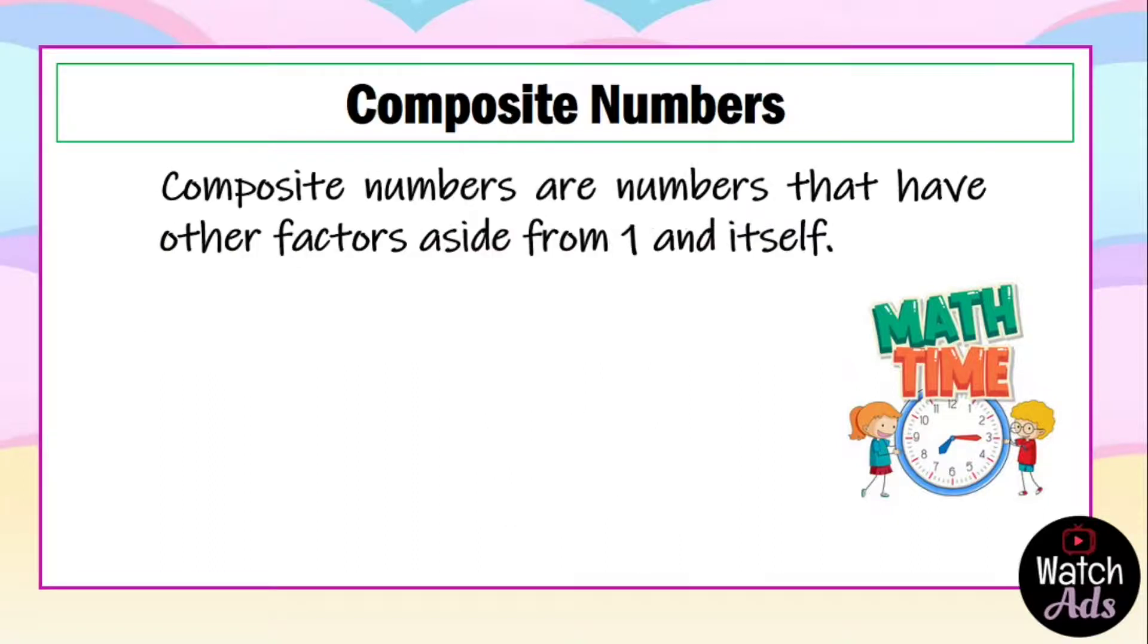Composite numbers are numbers that have other factors aside from one and itself. For example, we have 10. 1 multiplied by 10 is equal to 10, 2 times 5 is also equal to 10, which means the number 10 has four factors: 1, 2, 5, and 10.